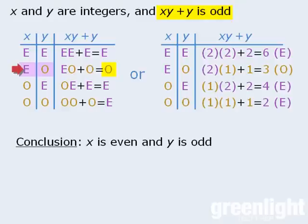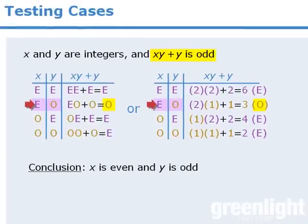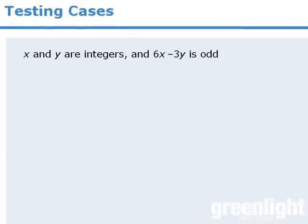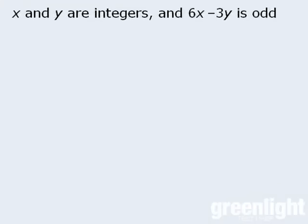We can continue this method for the other two cases, and when we do so, we see that our results in this table are the same as they were in the first table. Only one case results in our expression evaluating to be an odd number, so we can be certain that x is even and y is odd. Let's try another one. Let's say that we're told that 6x minus 3y evaluates to be an odd number. If this is true, what conclusions can we draw about x and y?